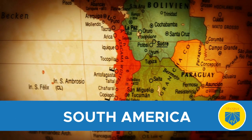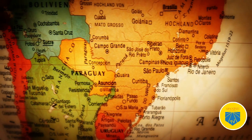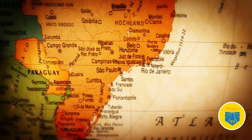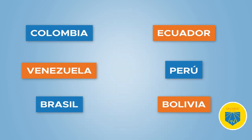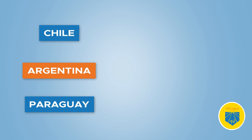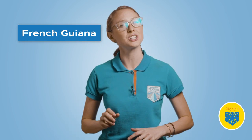Let's start from the south for a change. The continent of South America extends from the southernmost tip of Chile northward to Colombia's northern border with Panama, near the Panama Canal. South America contains 12 countries: Colombia, Venezuela, Brazil, Ecuador, Peru, Bolivia, Chile, Argentina, Paraguay, Uruguay, Suriname, and Guyana. The mainland of South America also contains one territory of France called French Guiana.